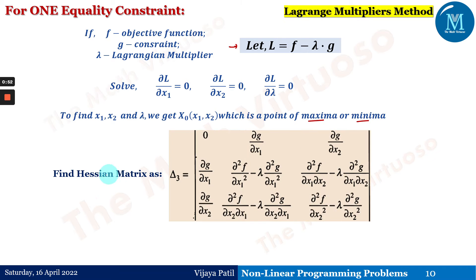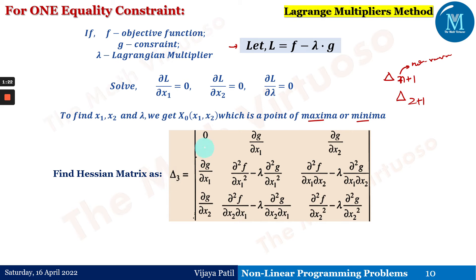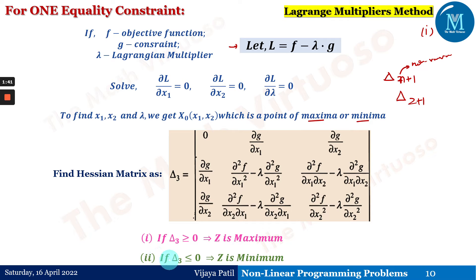Whether it is maxima or minima depends upon this matrix. Whenever we have two variables and one constraint, we get n+1, where n is the number of variables. In this case with x1 and x2, delta becomes 2+1, that is delta_3. This determinant is known as delta_3. If delta_3 is greater than or equal to 0, z is maxima; if delta_3 is less than or equal to 0 at the point, it is going to be minima.